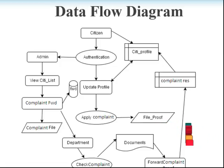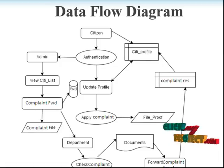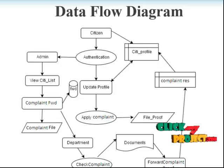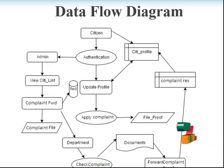Let me see the flow diagram of our project. First of all, the citizen goes to authentication, then updates their profile, applies a complaint, and then files proof.